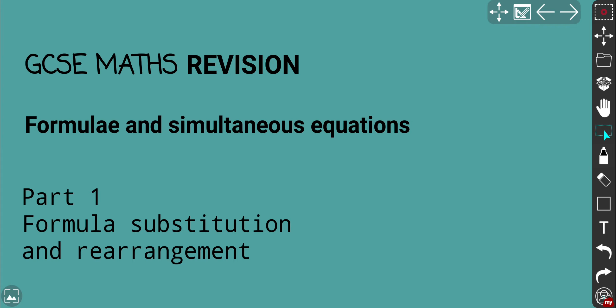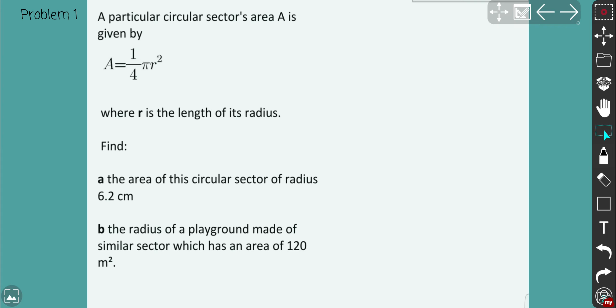So today we're gonna go through formula substitution and rearrangements and we have the first problem over there. So problem one. You have a particular circular sector area A and it's given by an expression. So obviously you see 1 over 4 pi r squared that means it's not the complete circle. Make sure you understand that. So r is the length of its radius.